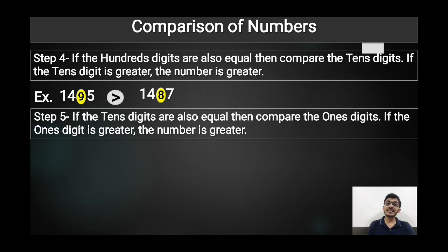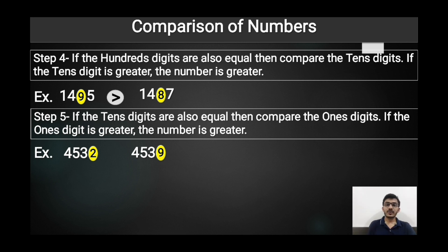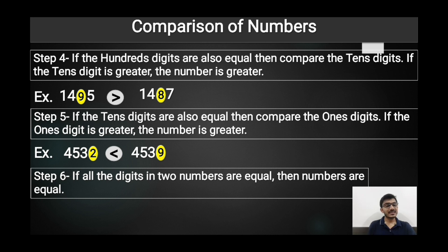Step five: if the tens digits are also equal in both numbers, we compare the place value of ones. For example, the place values of thousands, hundreds, and tens are all equal in both numbers, so we compare the ones place. In the first number the place value of ones is 2, and in the second it is 9. Since 9 is greater than 2, we write that 4532 is less than 4539. If both numbers are completely the same, we put an equal sign between them.